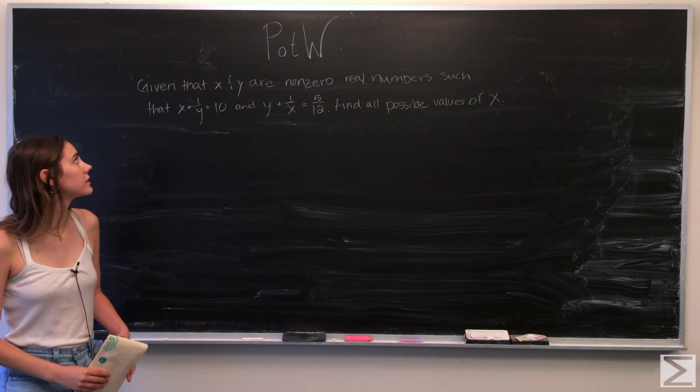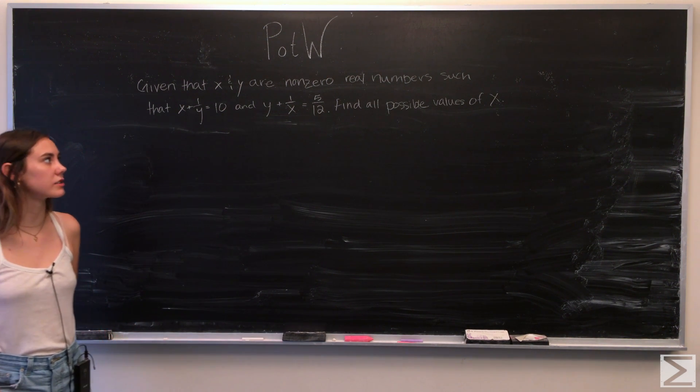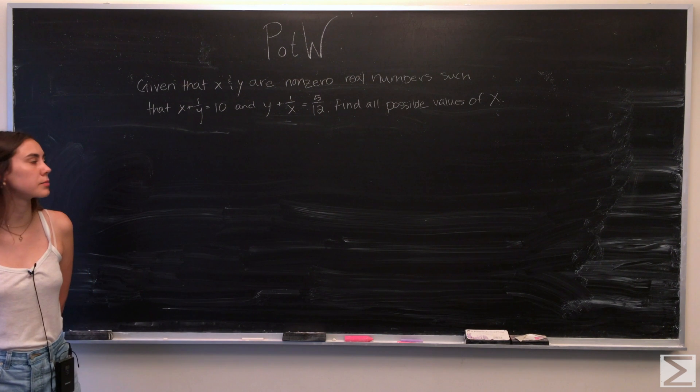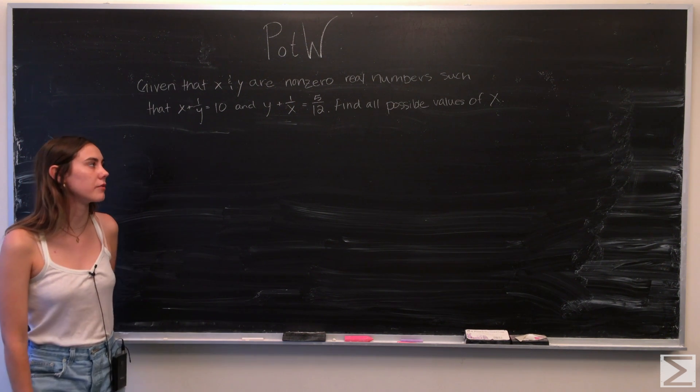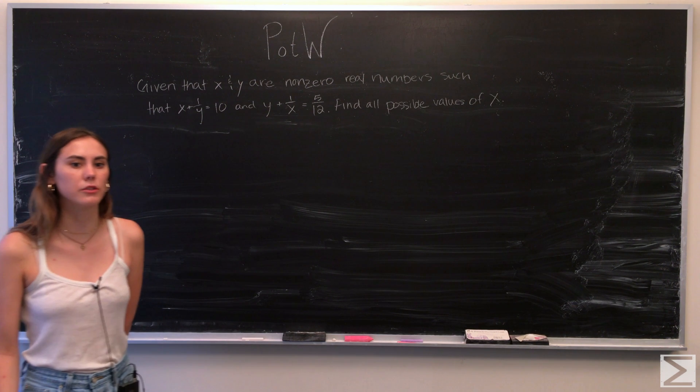So the problem is: given that x and y are non-zero real numbers, such that x plus 1 over y is equal to 10, and y plus 1 over x is equal to 5 over 12, find all possible values of x.